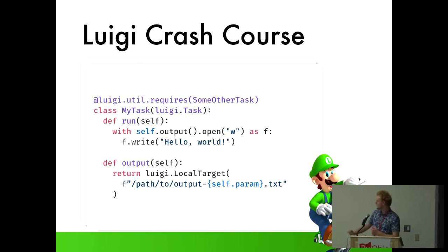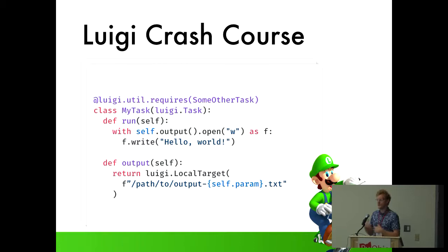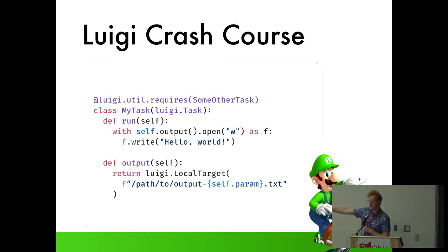Luigi also provides nice class decorators that prevent you from having to write all three methods. By using this decorator we can forgo writing the requires method and Luigi will handle it for us. Luigi also provides a lot of contrib packages for things like S3, GCS, and Postgres, so you really don't have to write a ton of code to define complex pipelines.